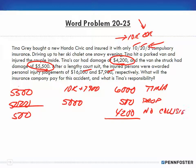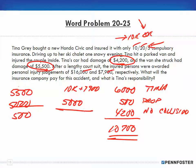Tina ends up paying a total of $10,700, and the insurance company ends up paying — $10,000 plus $7,900 plus $5,000 — that's $22,900 for the insurance company.